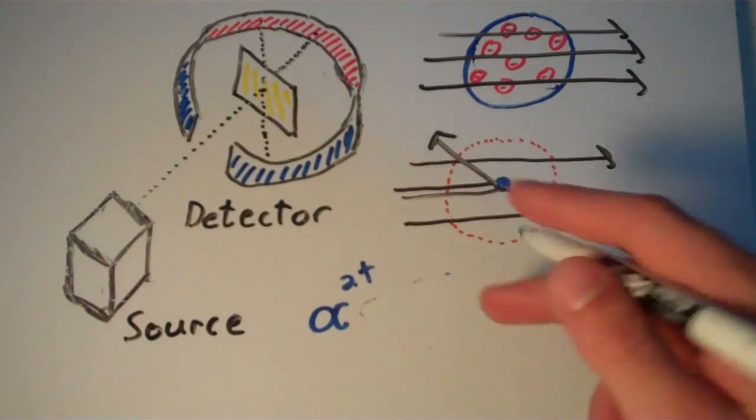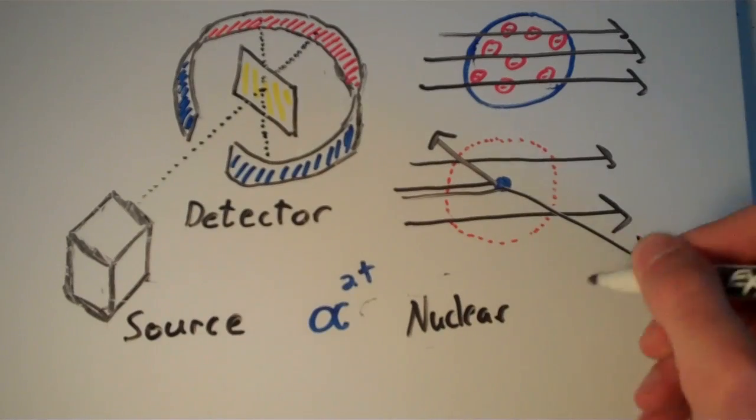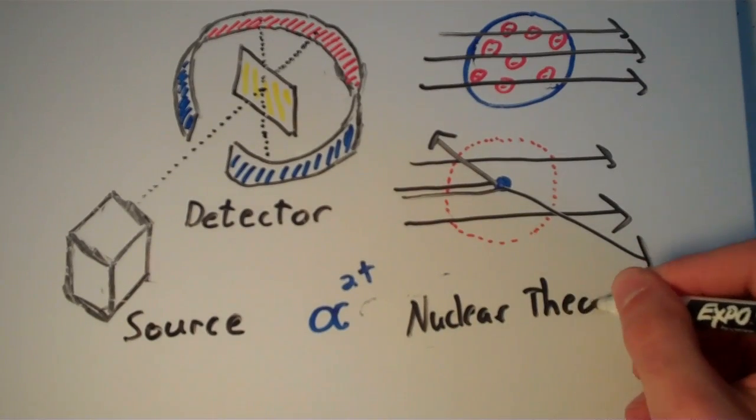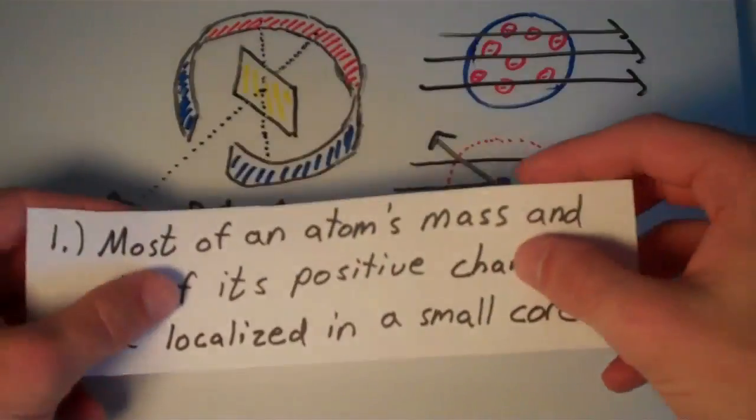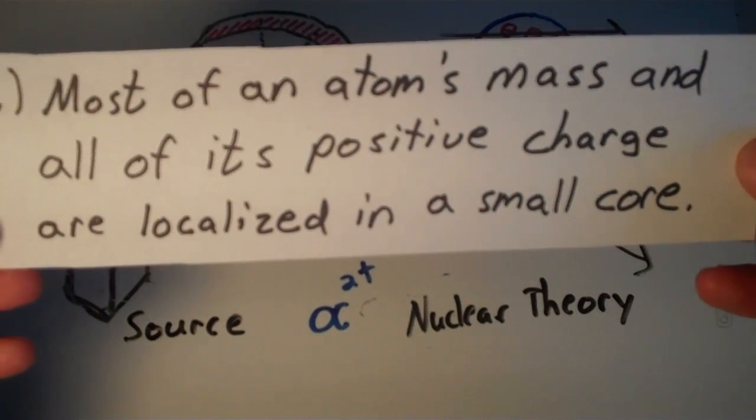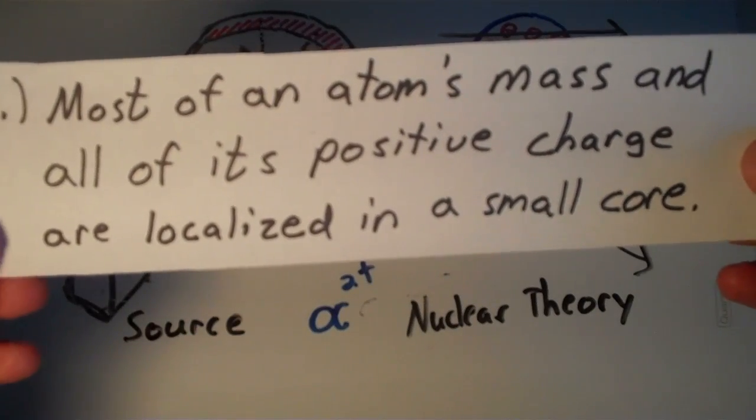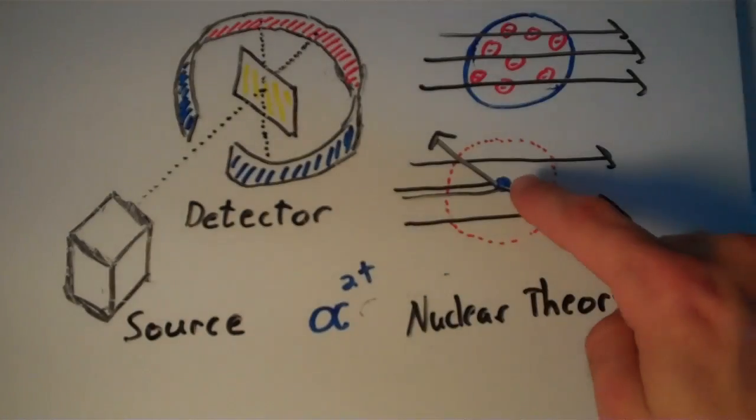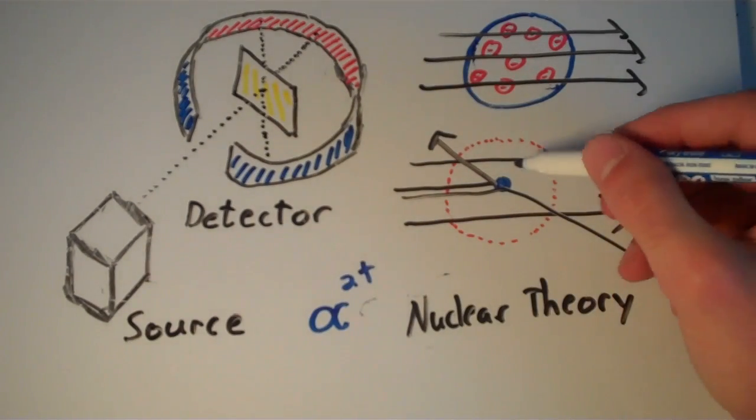And Rutherford's nuclear theory states the following three things. First, most of an atom's mass and all of its positive charge are localized in a small core. That small core is what we call the nucleus. So this little thing here is what we call the nucleus.